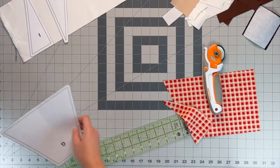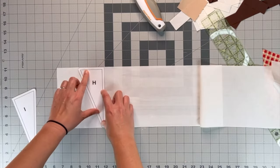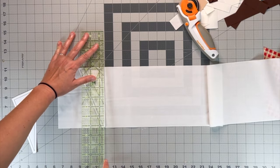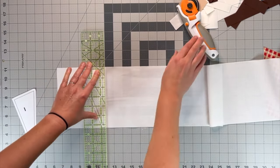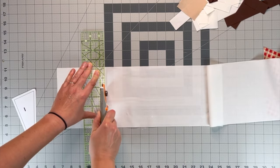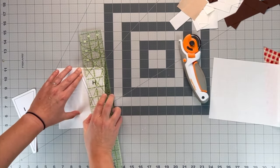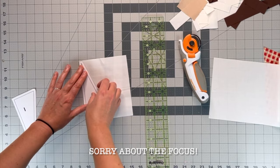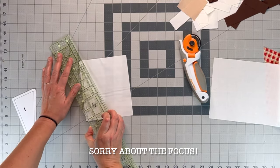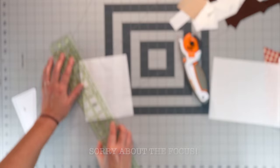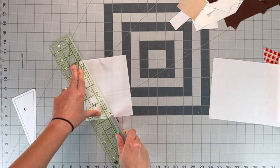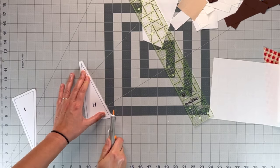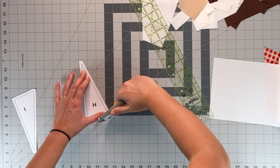And as far as the templates for the sides of the skirt, the lower portion of the block, we're going to do the same thing. Use our ruler to cut along the edges, and just trim the little ends.